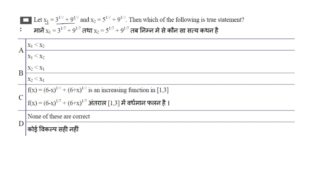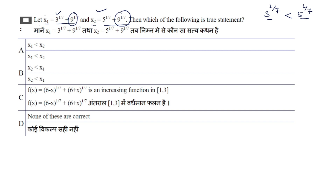The next question involves comparing x1 and x2. The question appears to be misframed. Looking at option c, the function f(x) = (6−x)^(1/7) + (6+x)^(1/7) is given. To check if it is increasing or decreasing, we find f'(x). The derivative gives terms with (6−x)^(6/7) and (6+x)^(6/7). Setting f'(x) = 0 gives x = 0 as a critical point.